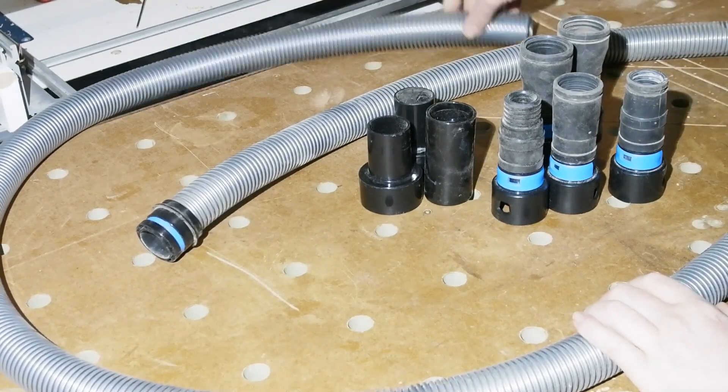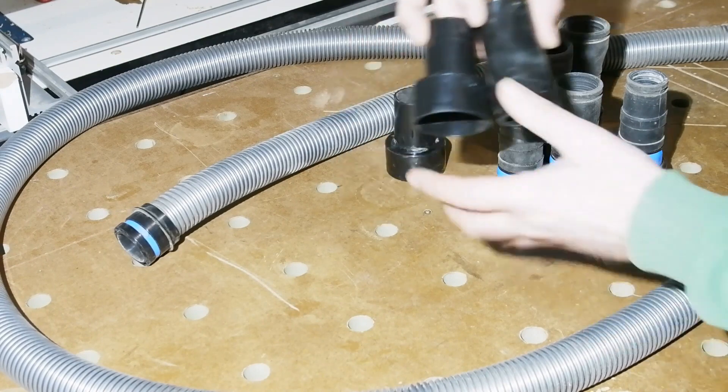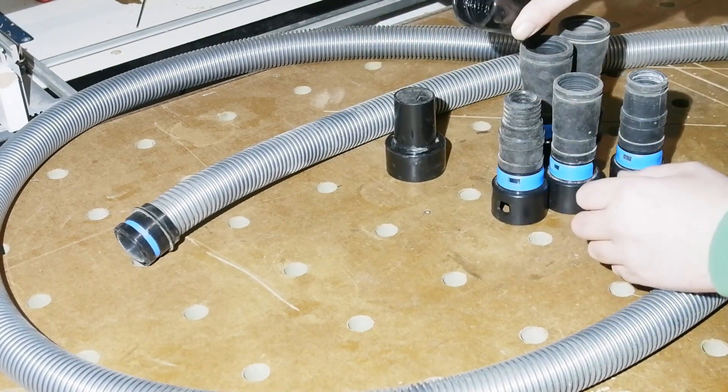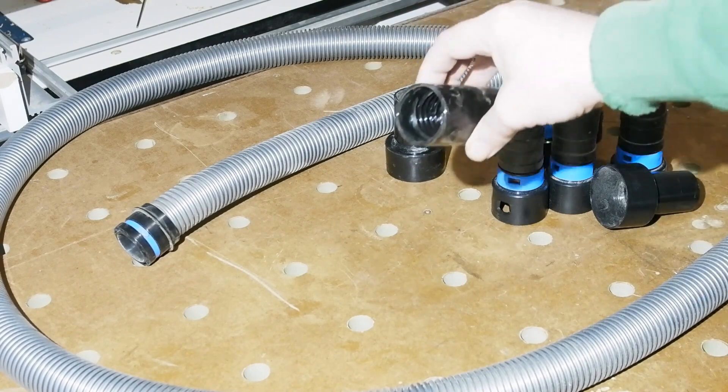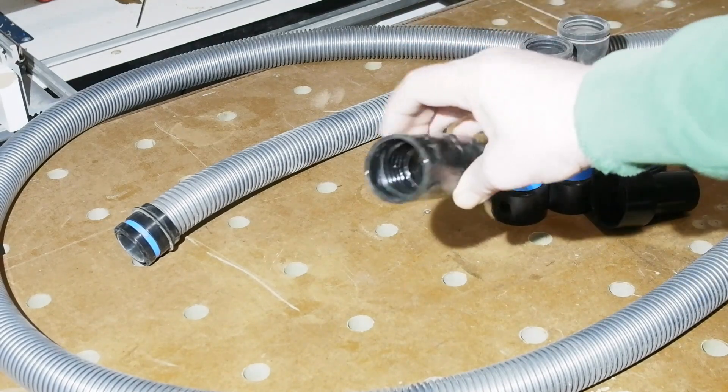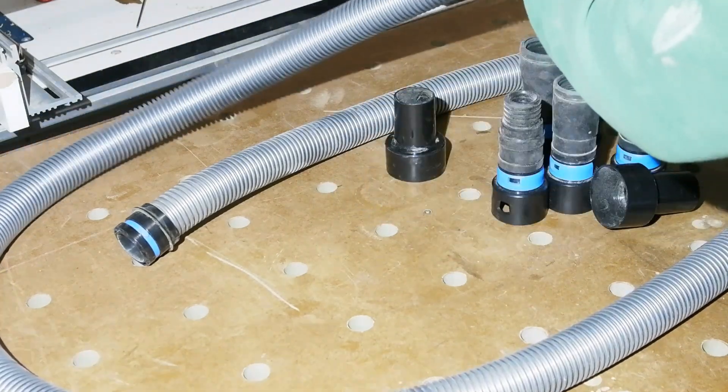So this is the set I got. It features what they call the quick click adapter, allowing you to swiftly change between the various sizes of power tool adapters. This set comes with 5 adapters of different sizes, though the two larger are the same, and 3 metres of hose, all for about £50.